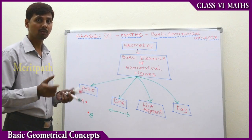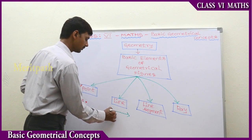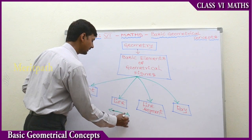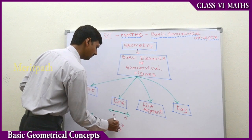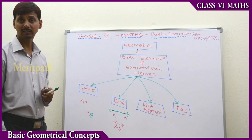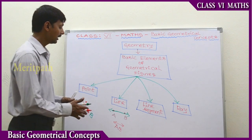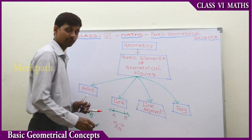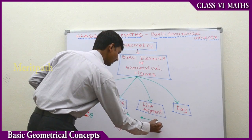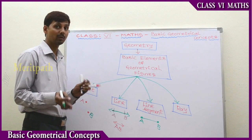A line extends endlessly on both directions and has no end points on either side. A line is defined by two points A and B, and we place a line symbol on it — AB with arrows is a line. A line segment is a part of a line. When we cut a line on both sides, we get a line segment. It has two end points, and AB is a line segment.